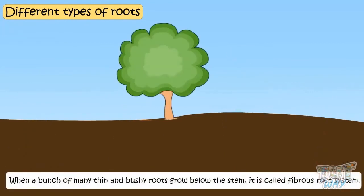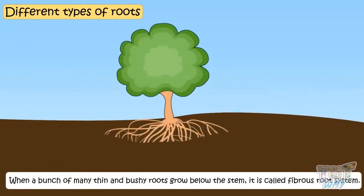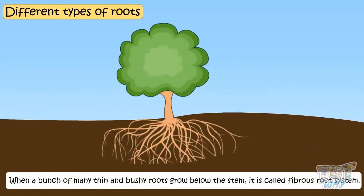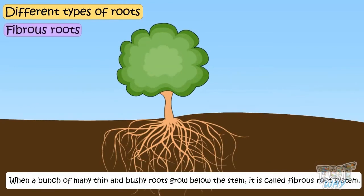When a bunch of many thin and bushy roots grow below the stem, it is called a fibrous root system. These thin and bushy roots are nearly equal in size.